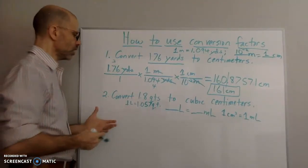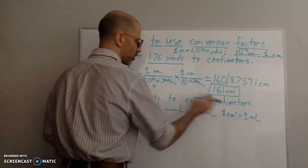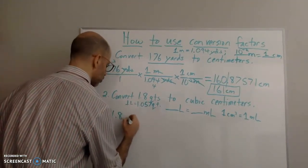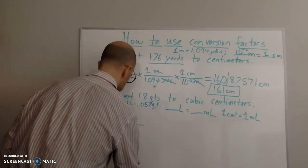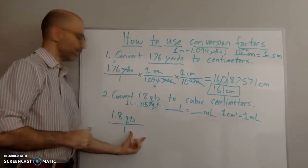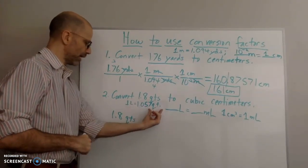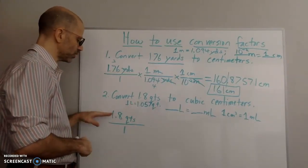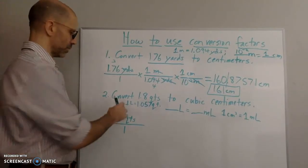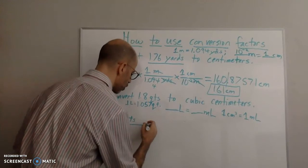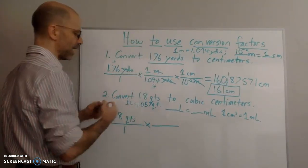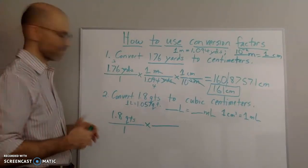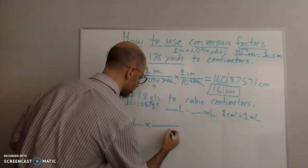Now let's try the second problem. They give me 1.8 quarts and want cubic centimeters. I set up the problem the same way — I write 1.8 quarts over one to create the ratio, since there's no other unit on the bottom. I'll keep multiplying by conversion factors until I get cubic centimeters. I put quarts on the bottom of my first conversion factor so quarts will cancel out.